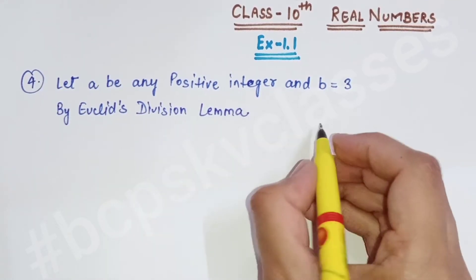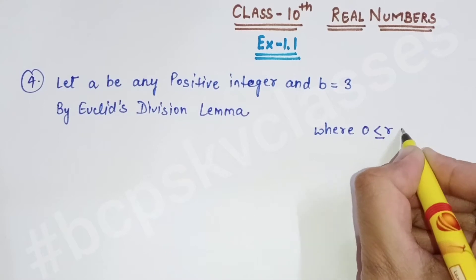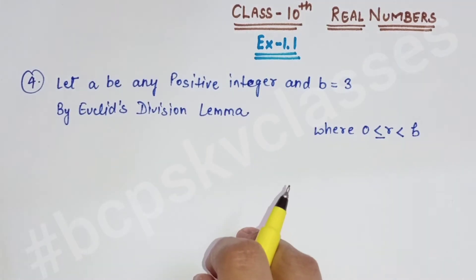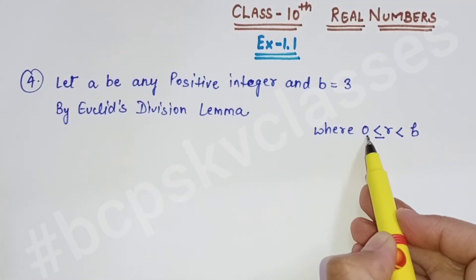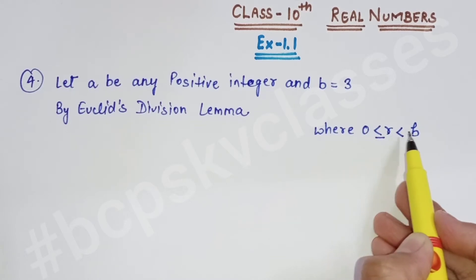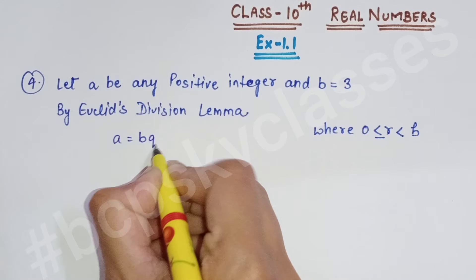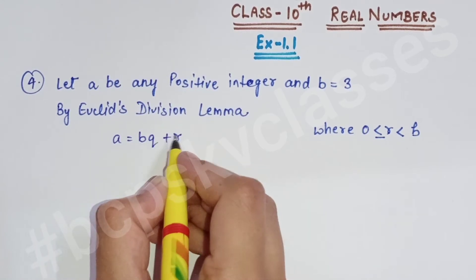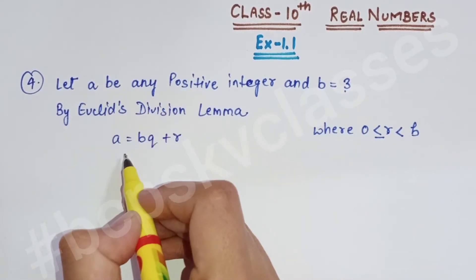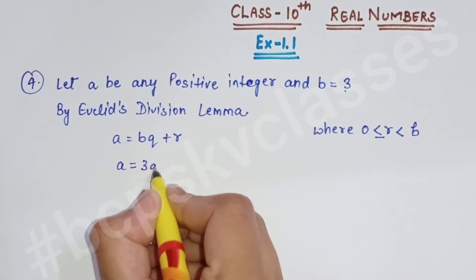Euclid's Division Lemma se humein pata hai: a = bq + r, where 0 ≤ r < b. Remainder ya to 0 hoga ya 0 se bada hoga, lekin always b se chhota hota hai. Humne b ki value 3 rakhi hai, isliye: a = 3q + r.